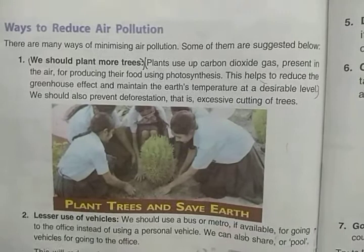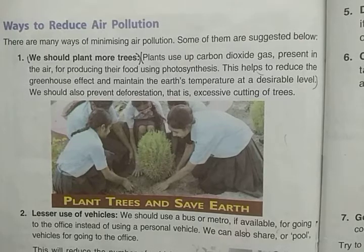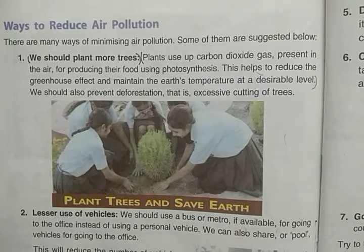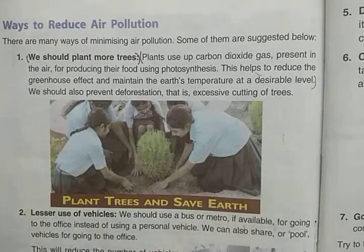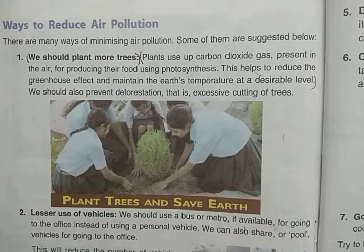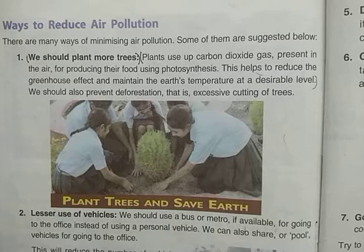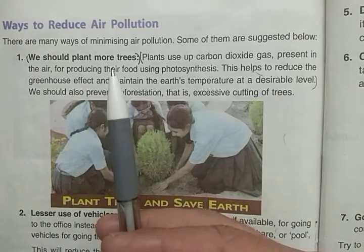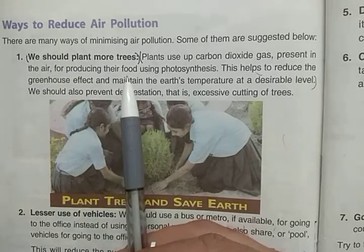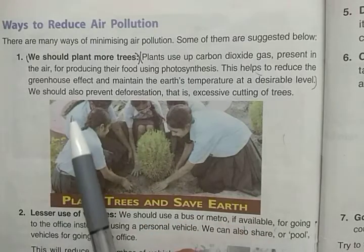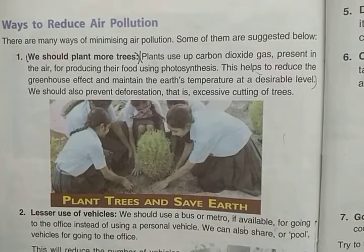Now, ways to reduce air pollution. We should plant more trees, because trees use up carbon dioxide during photosynthesis. The more trees there are, the more carbon dioxide is absorbed. This helps reduce the greenhouse effect and maintains the earth's temperature at a desirable level. We should also prevent deforestation.